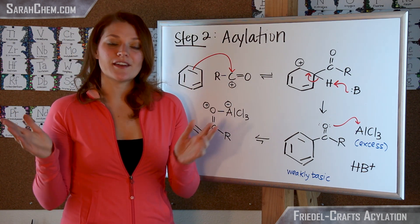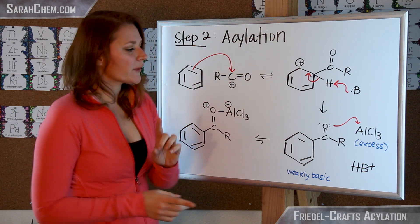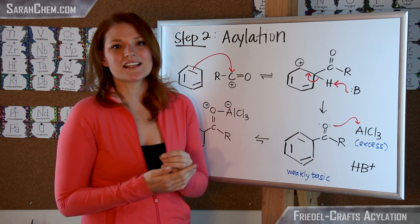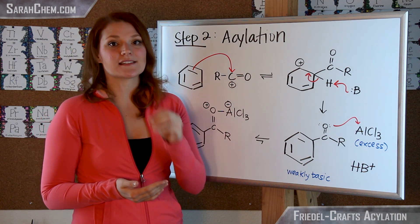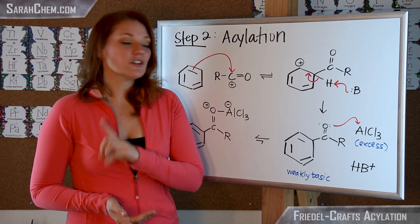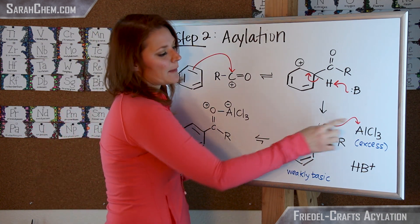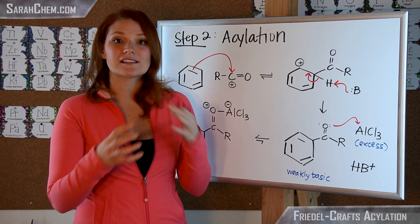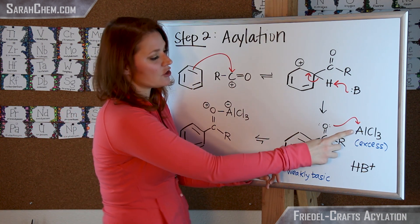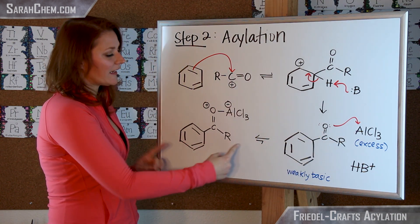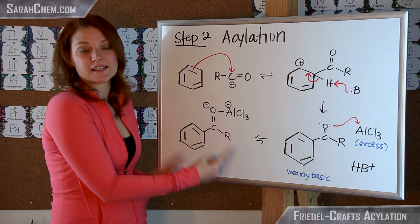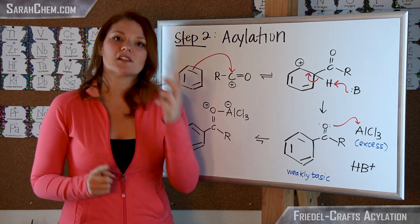Now we might think, okay, we're done, but we're not actually done. And the reason for that is we have to have an excess of AlCl3, a Lewis acid in the solution. Now it's important to note that this group here, this ketone, is weakly basic, which means that it is able to engage in a Lewis acid-base style reaction, such that when these two are together, what we actually get at the end of this step is this complex here.